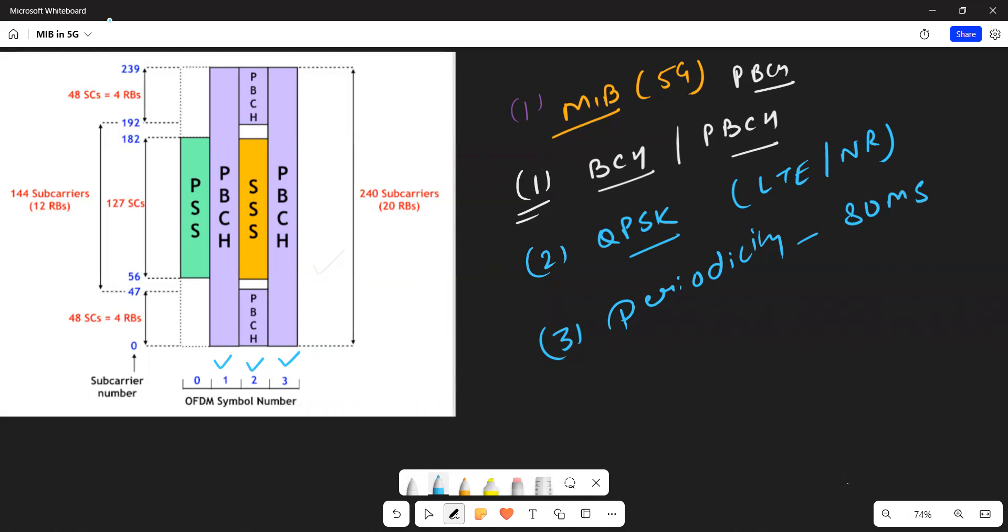Fourth point is it's transmitted over first, second, and third OFDM symbol of SS block. If you see the diagram, this is your SS block.